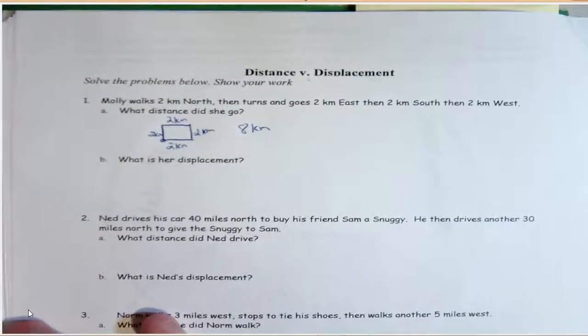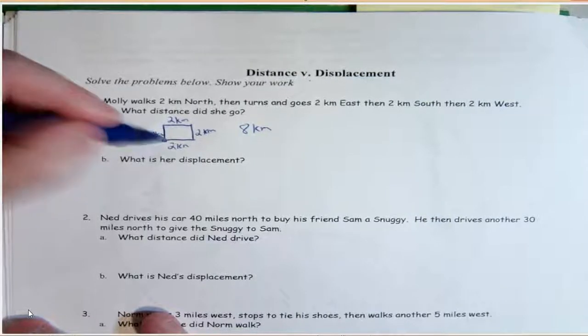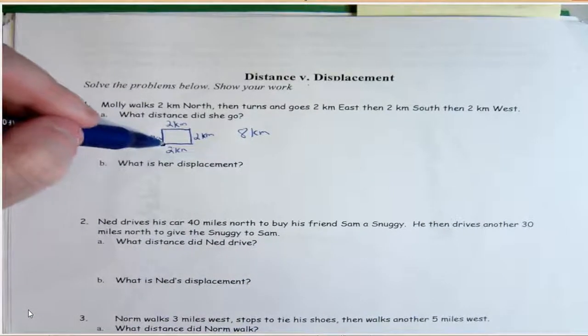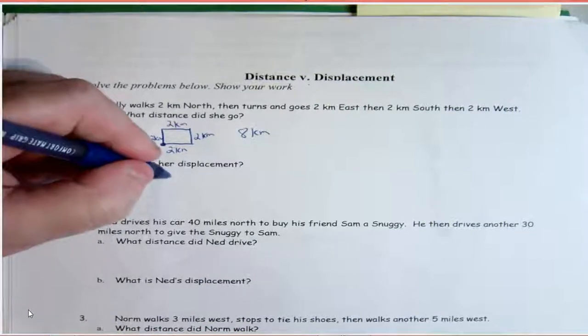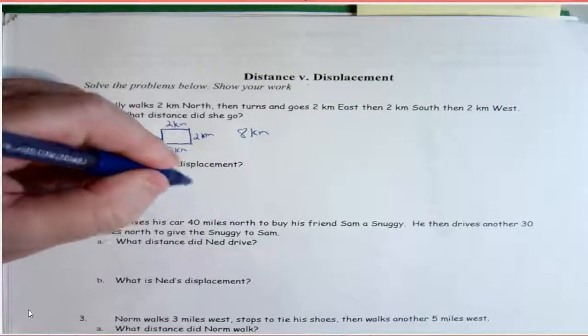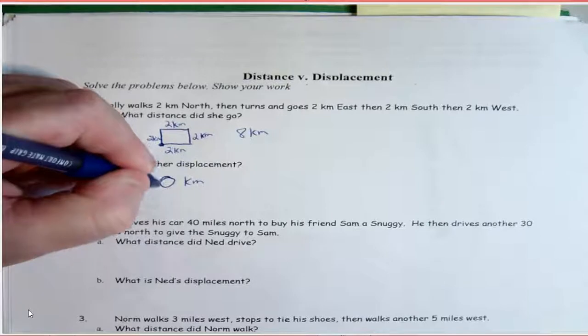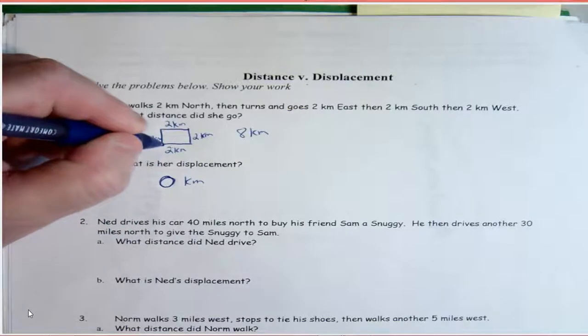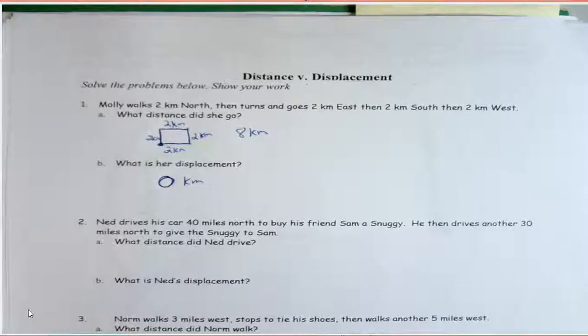Now, her displacement is how far she is from her starting point. Well, her starting point is here, so really her displacement is 0 kilometers. So her starting point is the same as her ending point, so her displacement is 0.